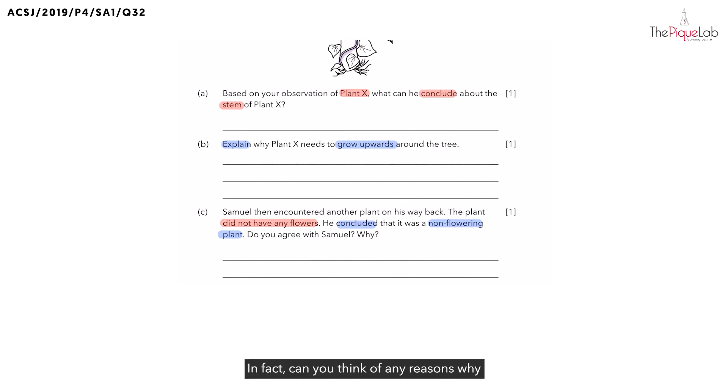No. In fact, can you think of any reasons why it could be a flowering plant? First of all, in order to see flowers on a flowering plant, can the flowers be seen at all stages of the flowering plant? No. In fact, flowers can only be observed growing on which stage? It can only be found on the adult stage. So, let's write this down. It can only be found on the adult plant. And if this plant that he saw did not have any flowers, what is a possible explanation why? It could have been a flowering plant, but it was not in the adult stage, which means the plant that he encountered was probably a young flowering plant.